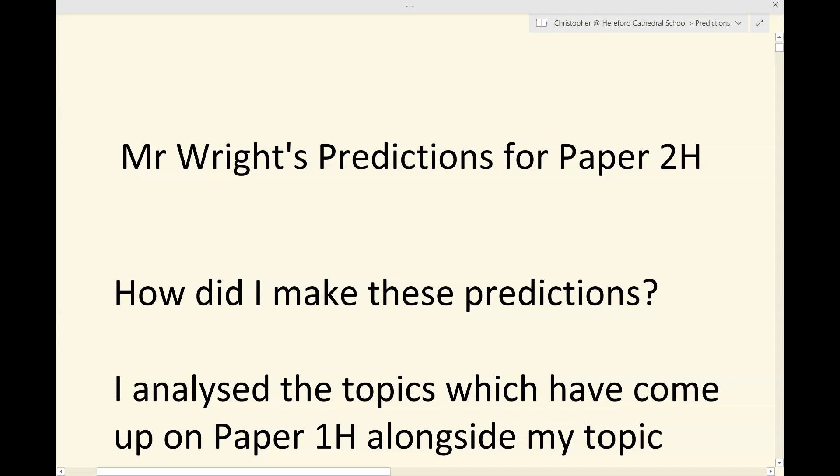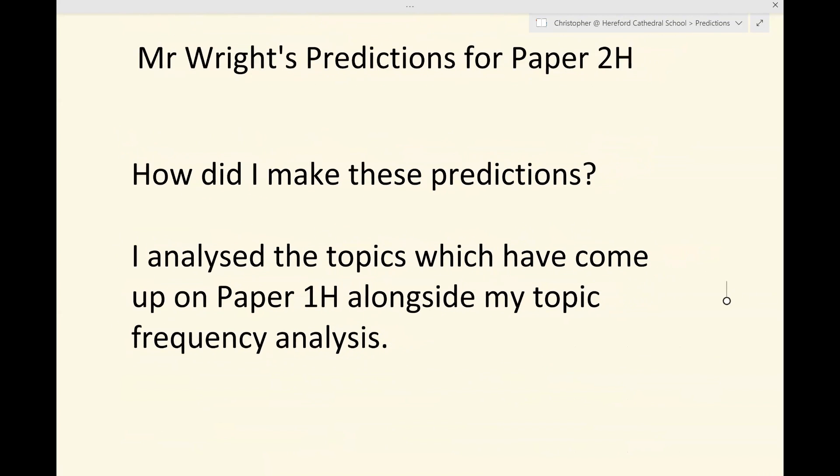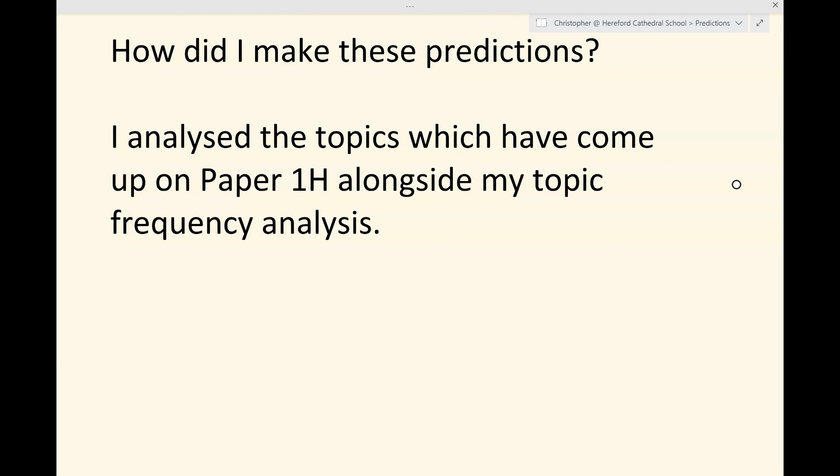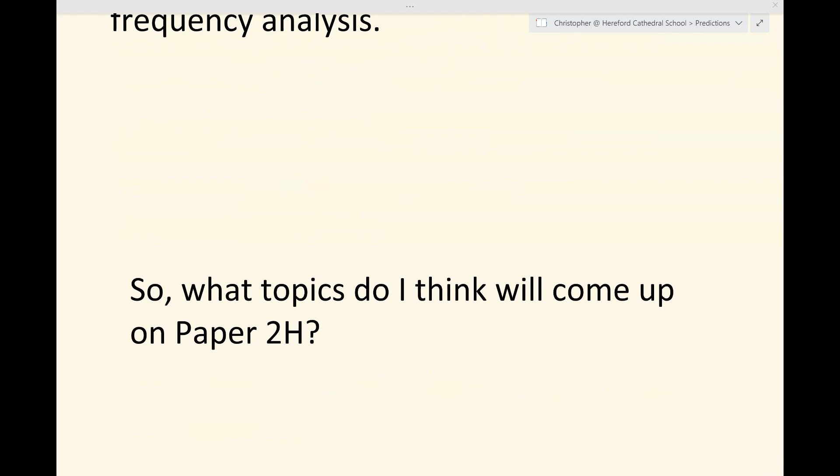How did I make these predictions? What I did was I took all the topics which came up on Paper 1H and I looked at that list alongside my analysis of how frequently each topic comes up. That meant that I was able to look and see which topics either haven't come up this year but one would expect them to, or which topics have only come up perhaps once and you would expect those particular topics to come up more than once across the two papers.